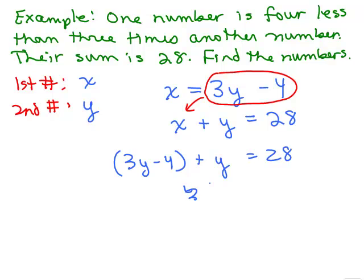And now it looks exactly like the problem when I only had a single variable. We would have 4y minus 4 equals 28. And if you keep solving this, you'll get y is 8.